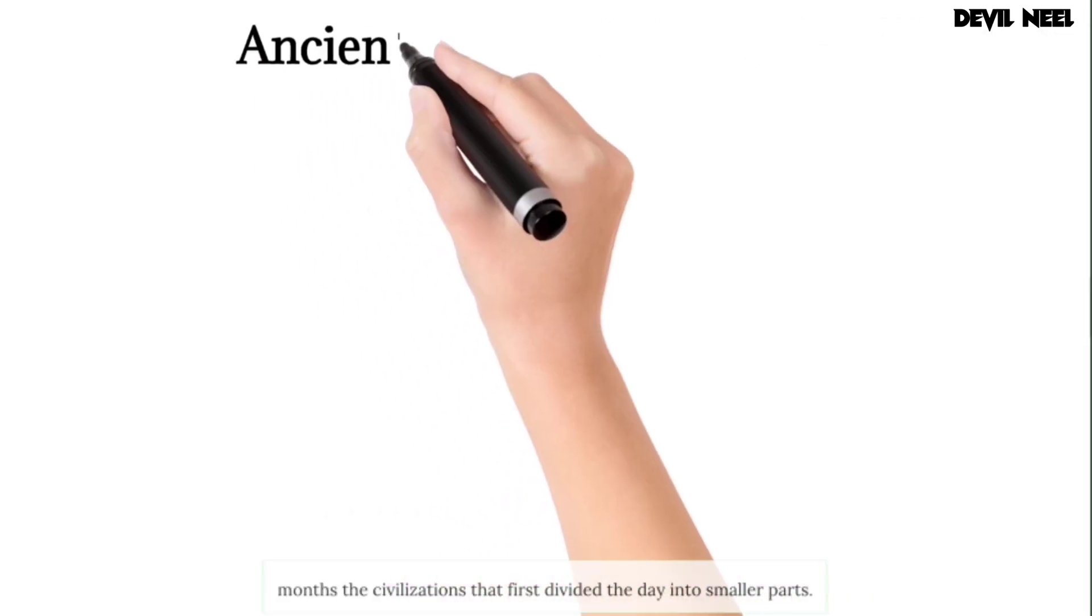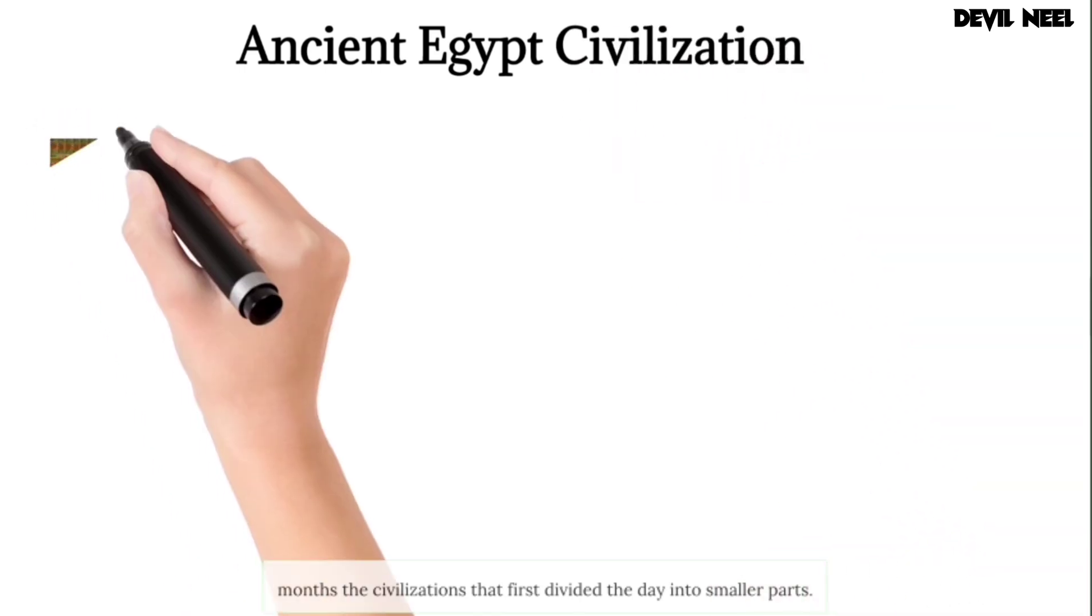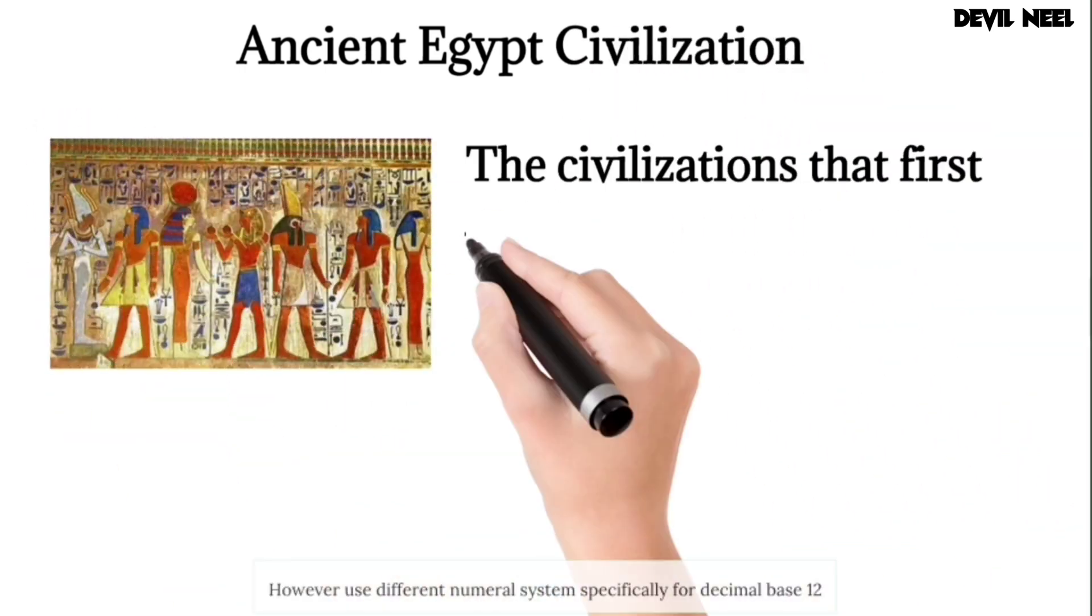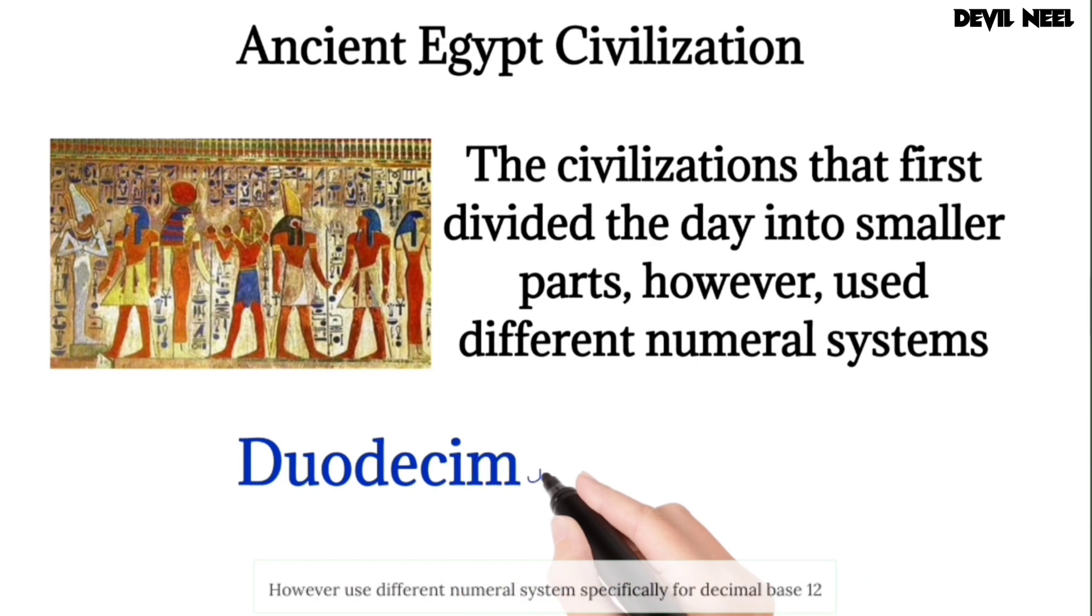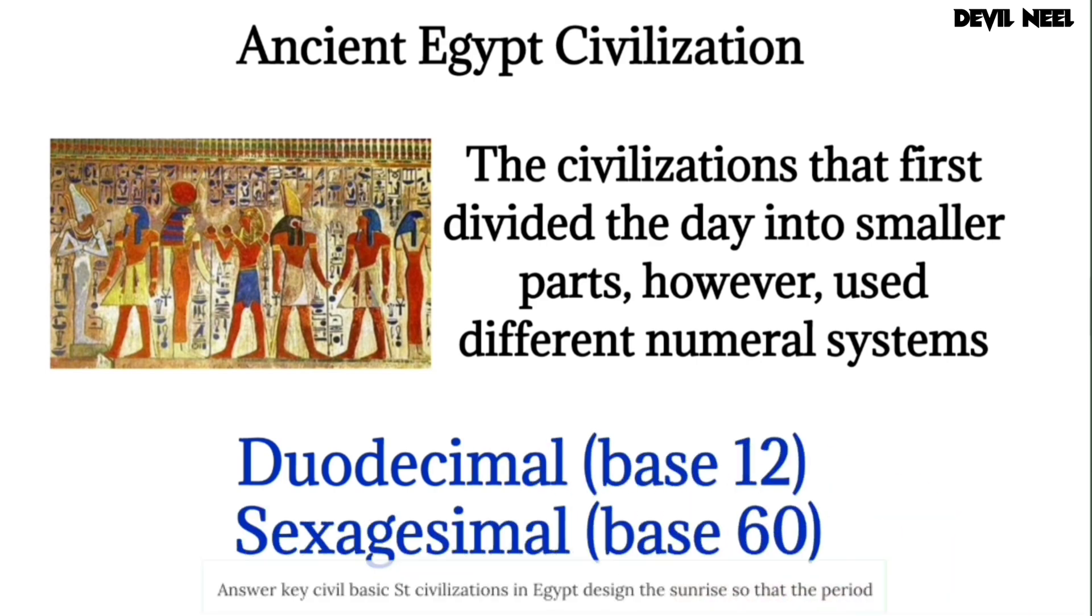Ancient astronomers would have noticed 12 lunar cycles in a year which we now call months. The civilizations that first divided the day into smaller parts, however, used different numeral systems, specifically duodecimal base 12 and sexagesimal base 60.